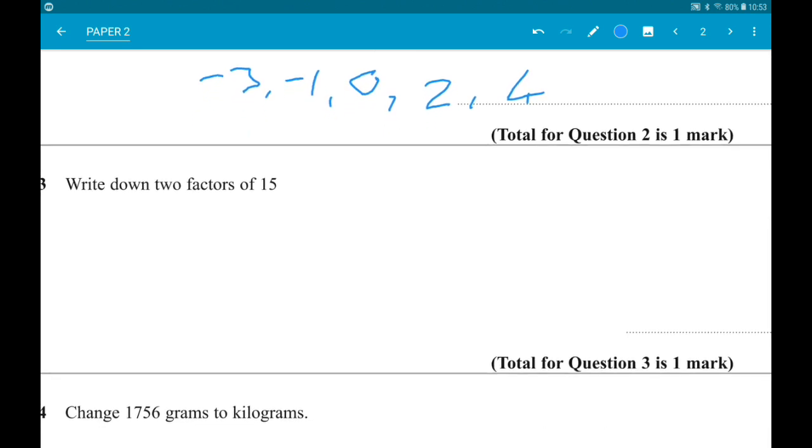Number 3: write down two factors of 15. So factors are numbers that go into 15. There's four of them: 1, 3, 5, and 15.